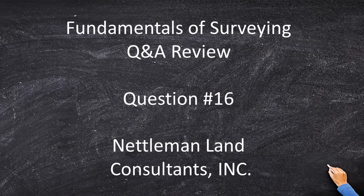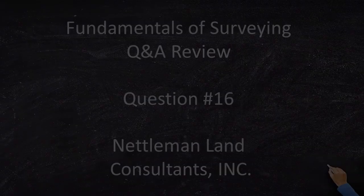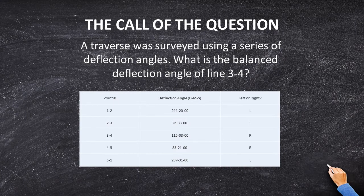Fundamentals of Surveying question and answer review. Question 16: a traverse was surveyed using a series of deflection angles. What is the balanced deflection angle of 3-4? I love this question because how often do land surveyors use deflection angles? Never — not since a long time ago. But that is still a tested subject on both the FS and PS exams.